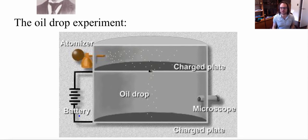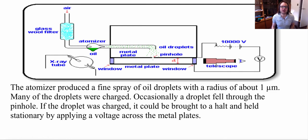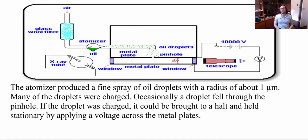Let's put this all together. Air atomizes the oil into tiny small particles, and these drop in through a little pinhole, which allows some of the oil drops to fall through. We have a telescope here to watch, and we have volts — you can increase or decrease the voltage to see when the drop stays. We have the distance to figure out our electric field strength. He also had an x-ray tube to shoot x-rays at the oil to give a better charge. The atomizer produced a fine spray of oil droplets with a radius of about 1 micrometer.